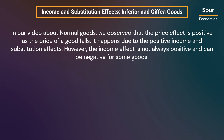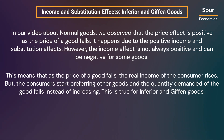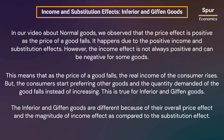In our video about normal goods, we observe that the price effect is positive as the price of a good falls, due to positive income and substitution effects. However, the income effect is not always positive and can be negative for some goods. This means that as the price of a good falls, the real income of the consumer rises, but consumers start preferring other goods and the quantity demanded falls instead of increasing. This is true for inferior and Giffen goods, which differ in their overall price effect and the magnitude of the income effect compared to the substitution effect.